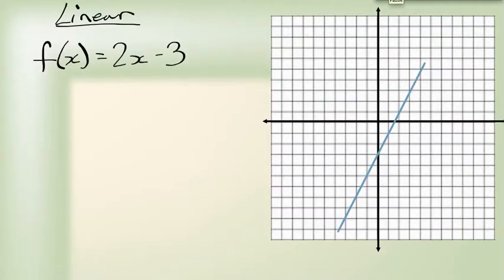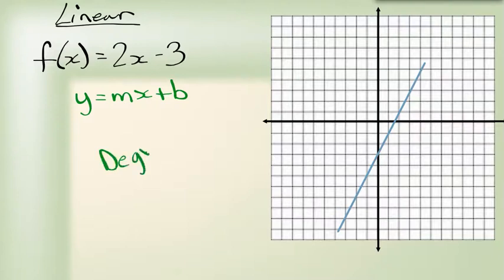A linear function is going to be a straight line on the graph when we draw it. As you can see, it follows the form Y equals MX plus B. This one has a degree of 1, because that's the highest power of X, and it will always be a straight line.